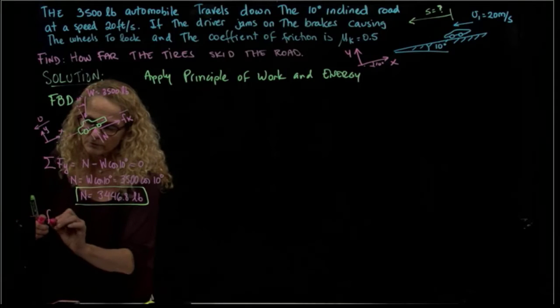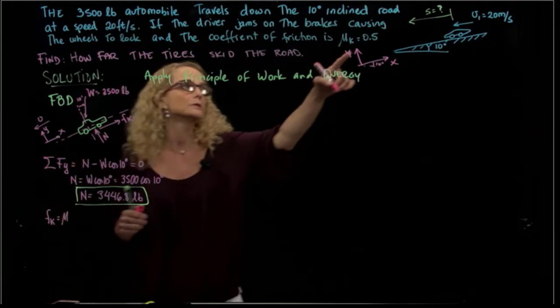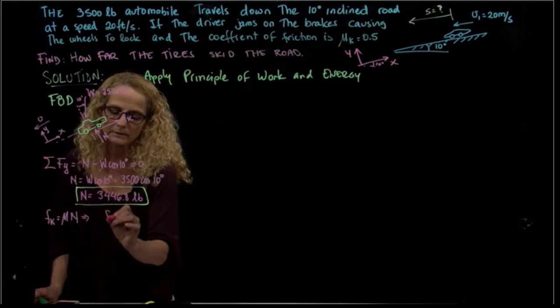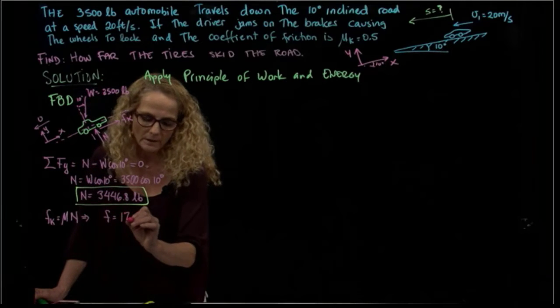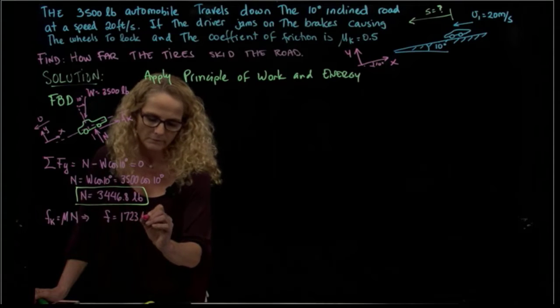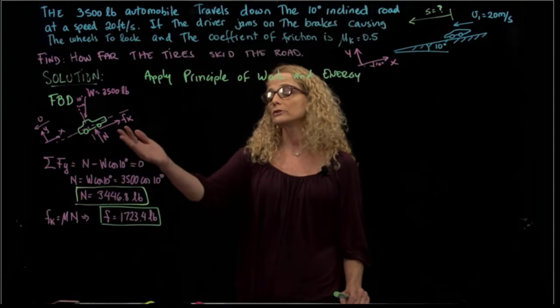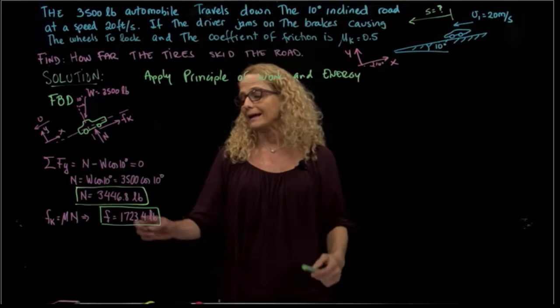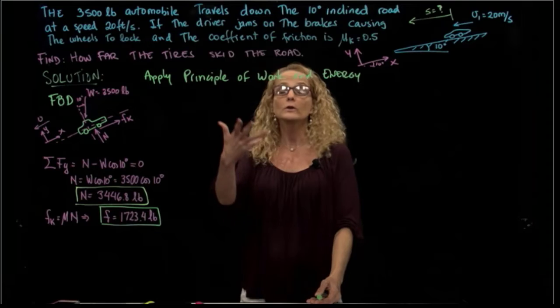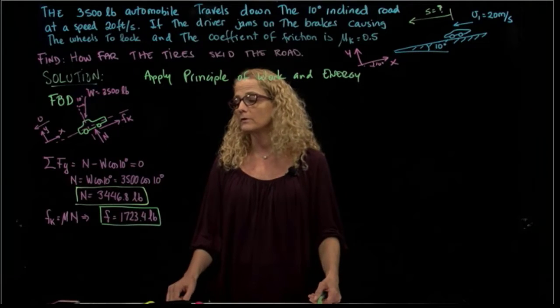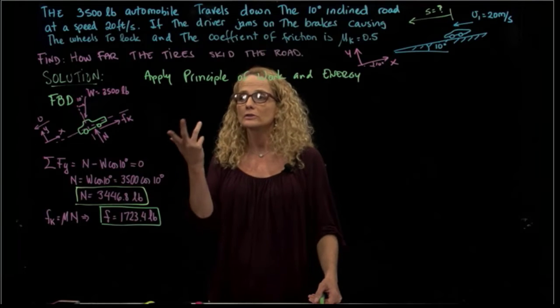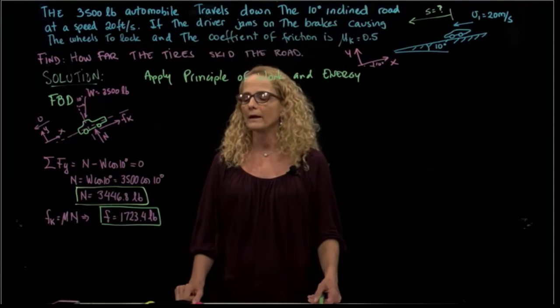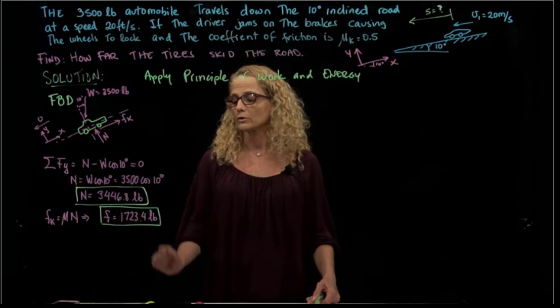I know that my friction force equals mu, which is 0.5, the kinetic coefficient, times the normal. So it will be half of that, which means it will be 1,723.4 pounds. Since the normal doesn't change along the path of the car from 0 to the distance S that I'm looking for, this force will be constant. But since the concept is that friction is a non-conservative force, we will treat it as a non-conservative force and apply the formula of work to calculate how much work that force does.